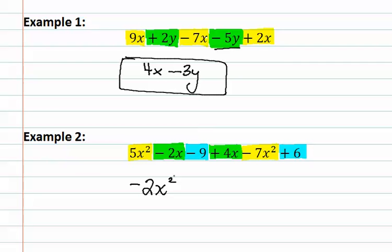Next, we go to the green or the X terms. We have a negative 2 and a positive 4, which are different signs. We therefore subtract, giving us 2X. The sign on the 2X is positive because the 4 is the larger number, and it is positive.